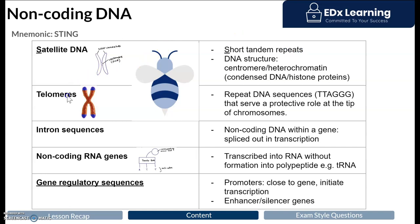Now let's talk about telomeres. Telomeres are caps at the end of chromosomes — I like to think of them as protective caps at the end of shoelaces. Aglets are the protective caps at the ends of shoelaces, and they prevent the lace from fraying and being damaged. Telomeres serve a very similar function. Each time a chromosome replicates, it loses a small portion of its telomere. Eventually, when all of the telomere is lost and we run into coding DNA, the cell will stop dividing and undergo apoptosis — that is programmed cell death. In summary, telomeres are protective caps added to chromosomes to protect the coding genes.